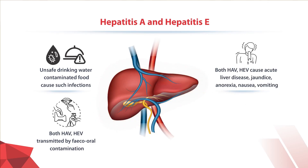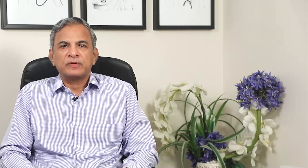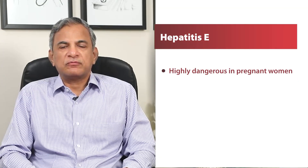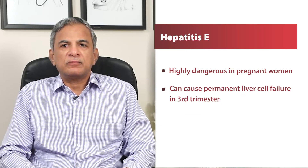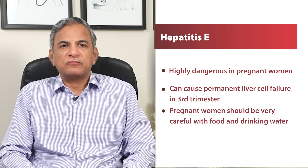Both these viruses usually produce only acute liver disease. They produce jaundice and prodromal symptoms of anorexia, nausea and vomiting, but most often in about 2 to 3 months you will recover. However, the E virus is dangerous if it affects pregnant females, as it can produce fulminant liver cell failure in the last trimester of pregnancy. So pregnant women have to be very careful in what they eat and what they drink.